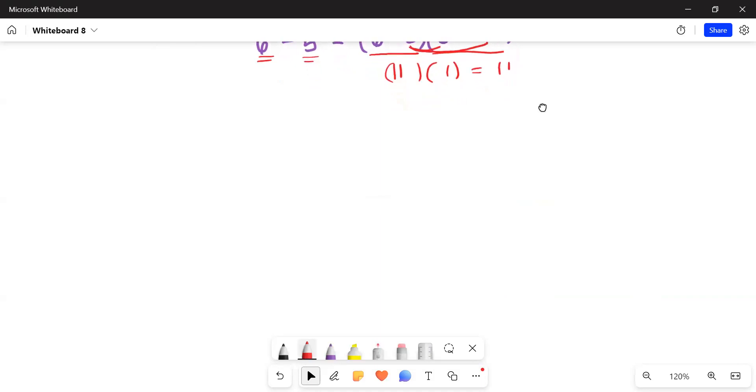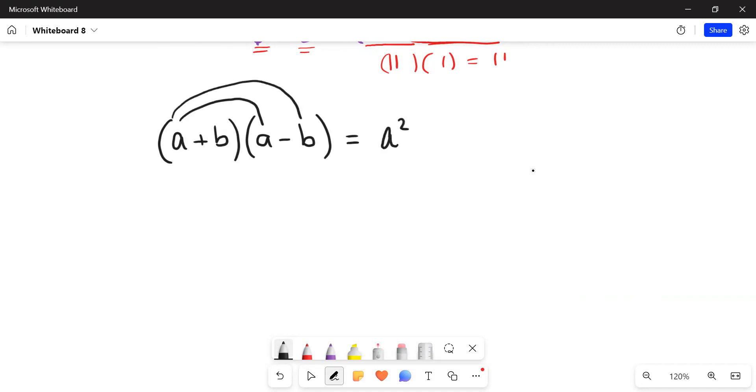So in general, let's look at what happens with the algebra. If you have quantity a plus b times quantity a minus b, if you distribute this out, you'll get a times a, a squared, a times negative b, negative ab. And then distributing this, b times a, we'll write it in alphabetical order. It'll be ab. And then b times negative b, negative b squared. Notice that these two middle terms are opposites. They cancel out. And we're just left with a squared minus b squared.